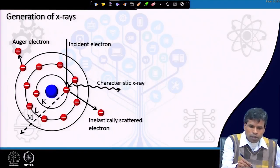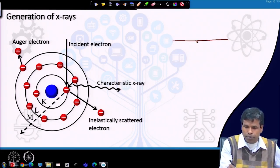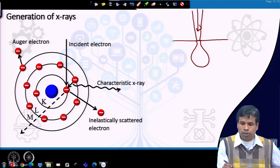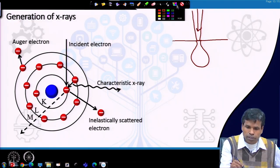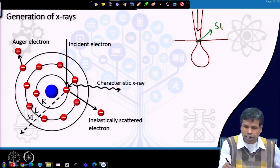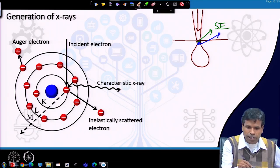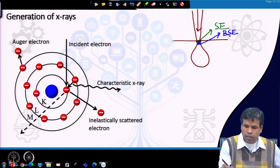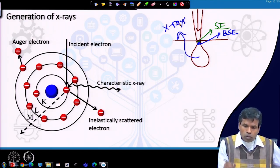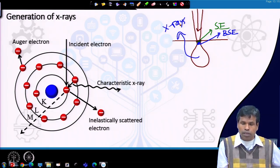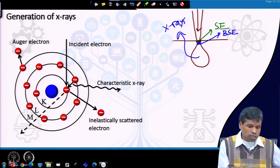When the electron beam interacts with the specimen, it forms a pear-shaped interaction volume. From the top surface we get secondary electrons, below that we get backscattered electrons, and we also get X-rays. When the electron beam is incident on the sample, it can knock off an inner shell electron of an atom.